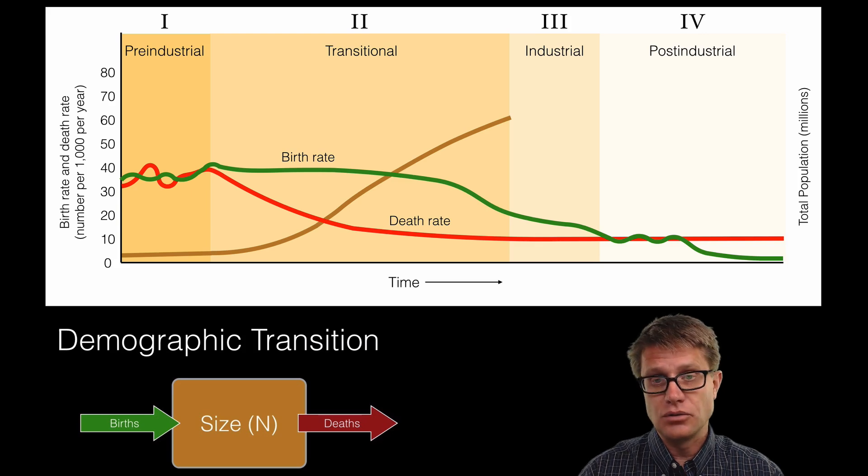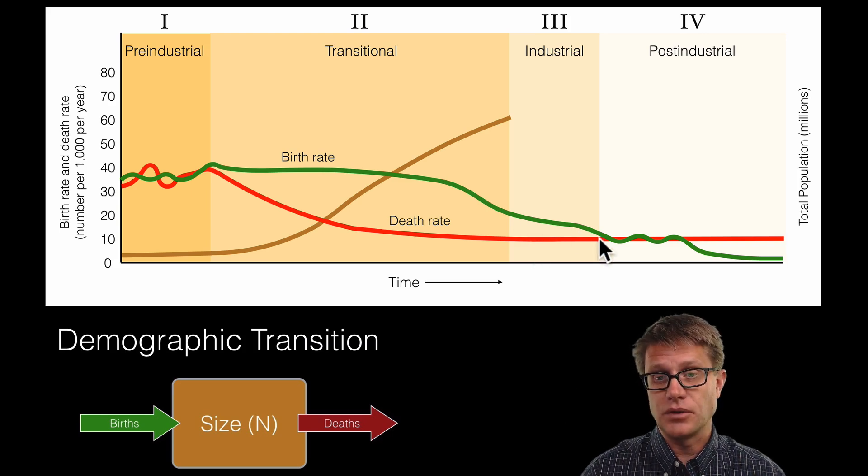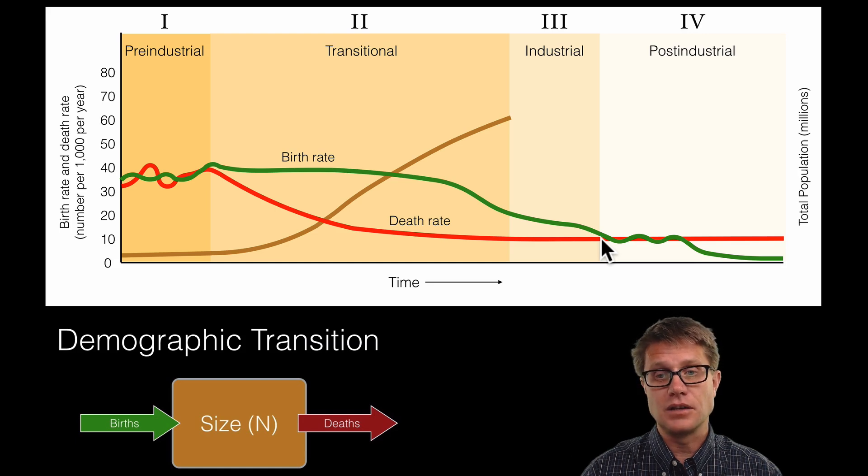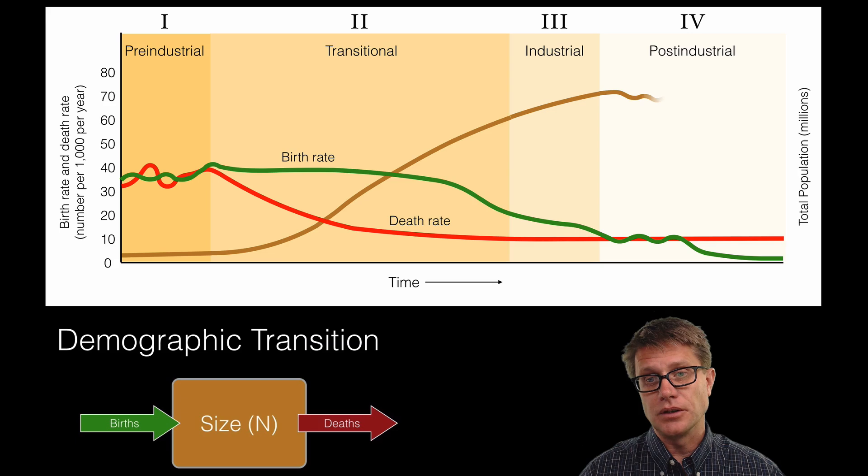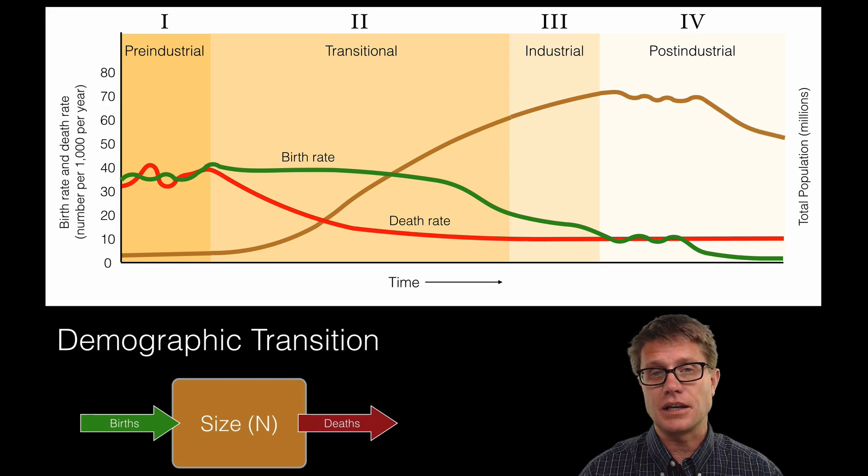What happens as these two approach each other during the industrial phase, as the birth rate eventually drops to the death rate, you could imagine that it is going to stabilize again. And then what is happening post-industrial, eventually we see the population dropping off. So we can see this in a lot of countries.